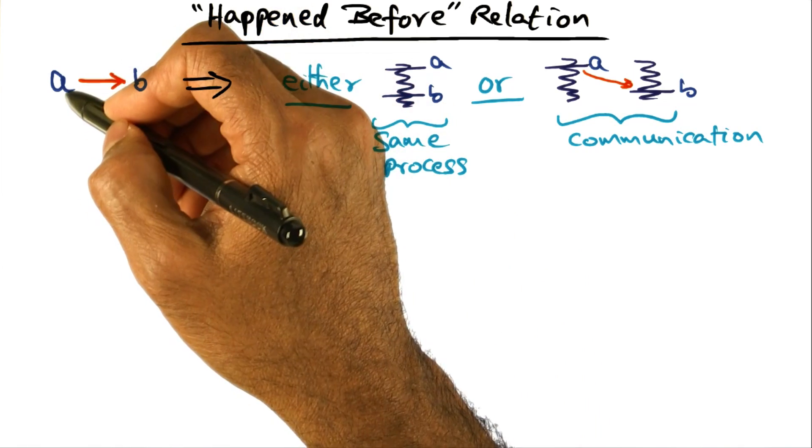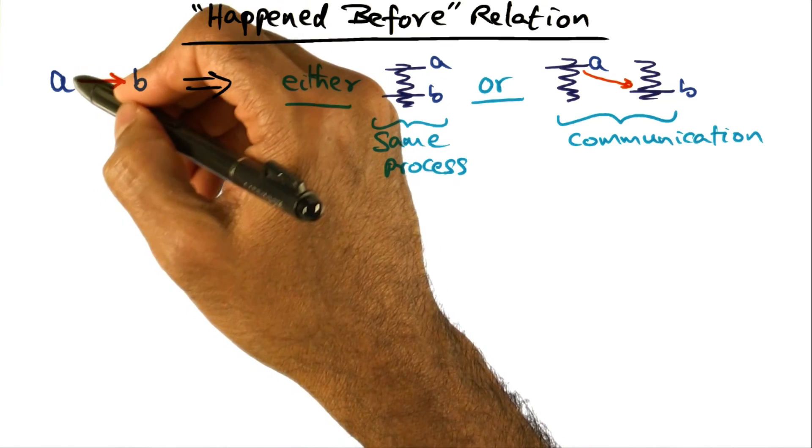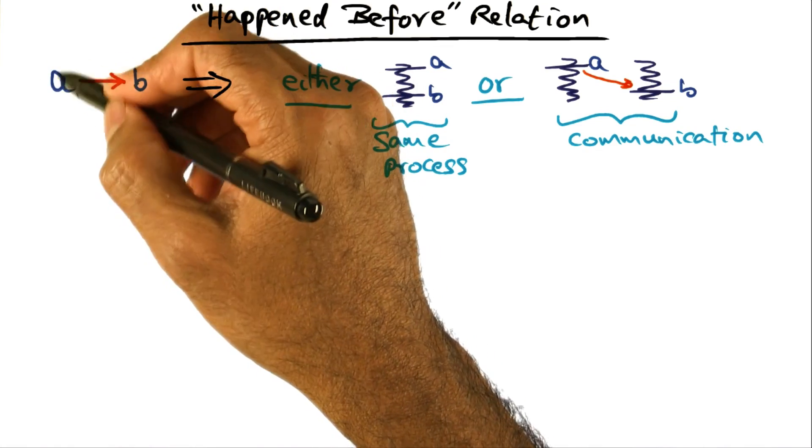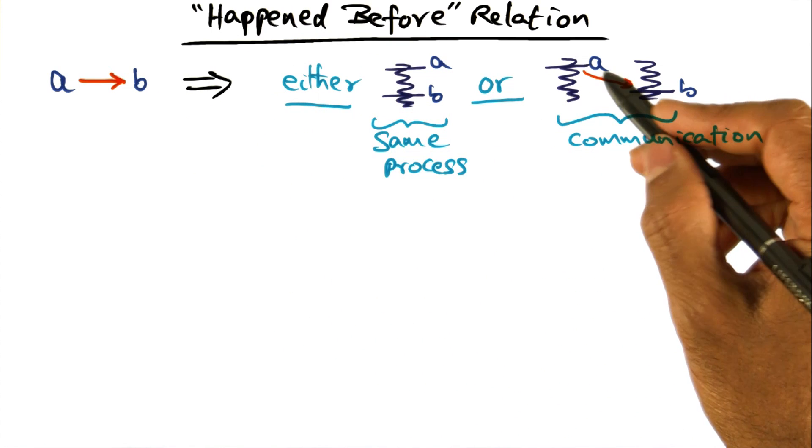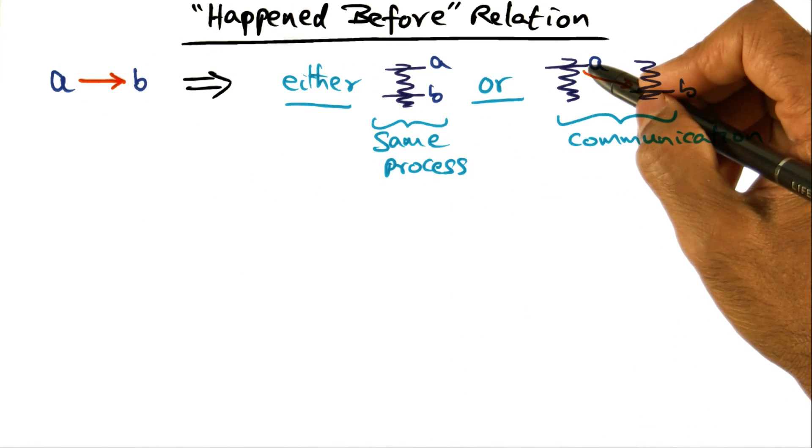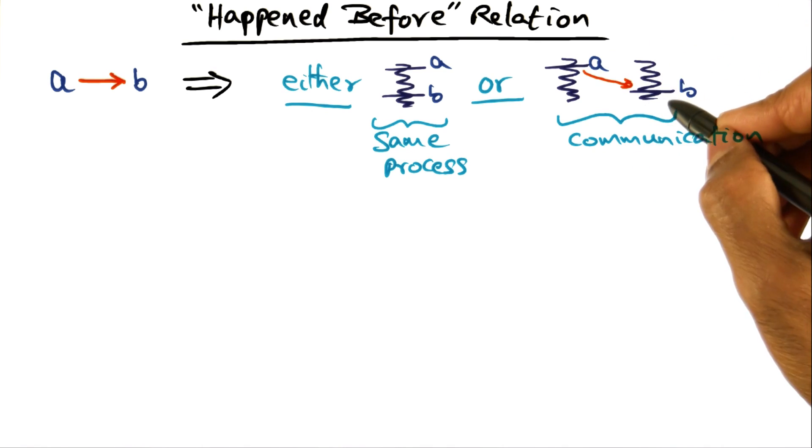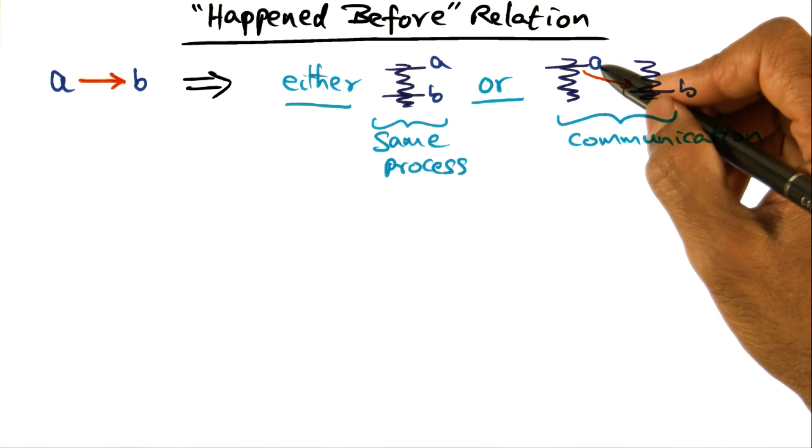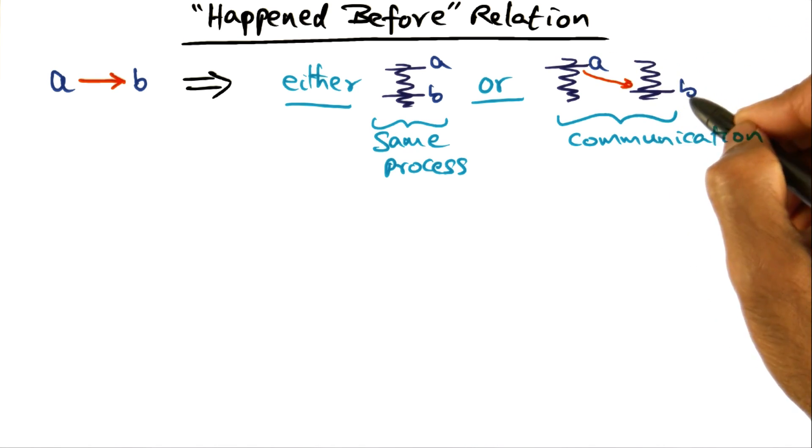Or if you're asserting that A happened before B and A and B are not events on the same process, but A is an event in one process, B is an event in a different process, then there must be a communication event that connects A and B. In other words, if A is a communication event of a message, and B is a receipt of that same message, then A happened before B, where A is a send of that message and B is the receipt of the message.